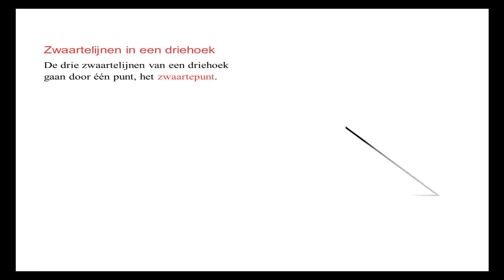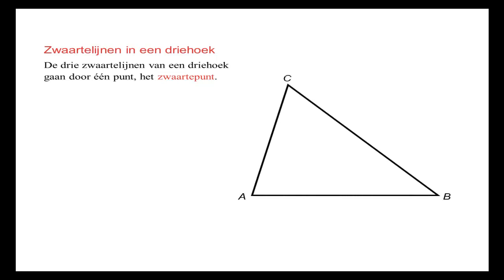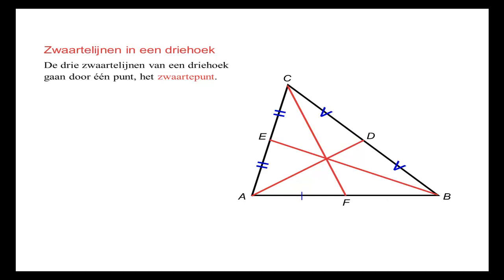Als we een driehoek tekenen en we tekenen daar de zwaartelijnen in: ik heb nu een zwaartelijn getekend vanuit hoek A op het midden van de overstaande zijde BC. Dit is de zwaartelijn vanuit hoek B op het midden van AC. En dan tekenen we nog een zwaartelijn vanuit C op het midden van AB. Deze lijnen gaan allemaal door één punt, en dit punt wordt ook wel het zwaartepunt genoemd.